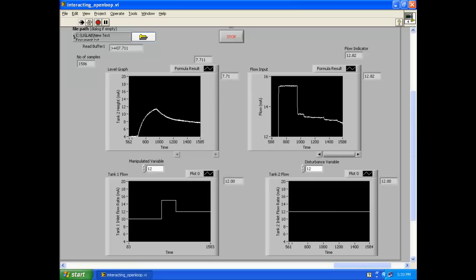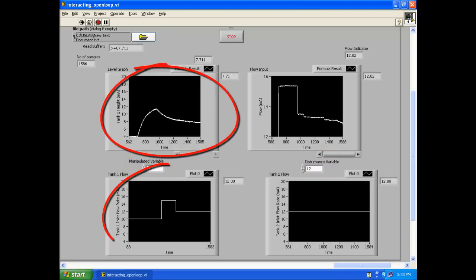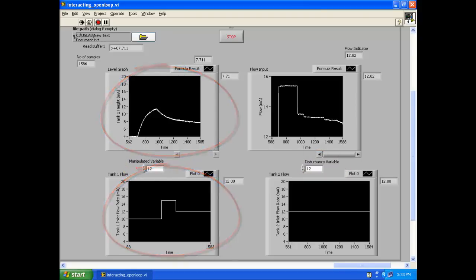Here you can see the screenshot of the LabVIEW interface that you will be seeing on your computer. First select the file path into which you will be saving the data values. You can control the magnitude of the flow of water into the tanks via these arrows provided. The height of water in tank 2 can be seen plotted with respect to time and the step change can be seen in this graph.